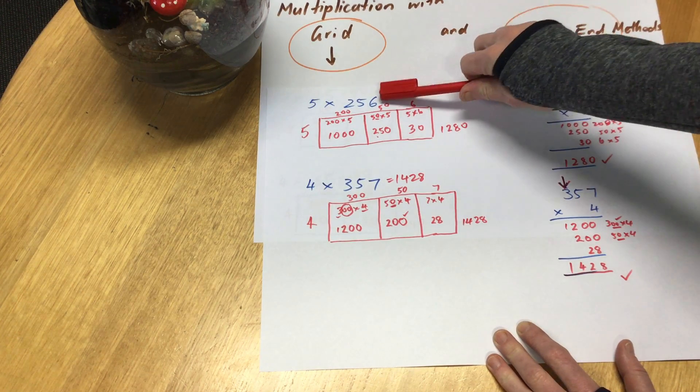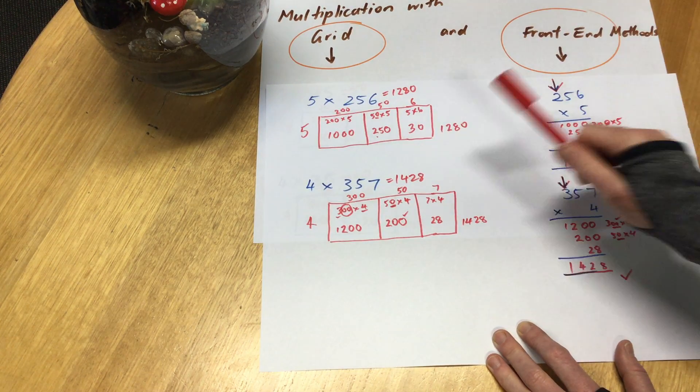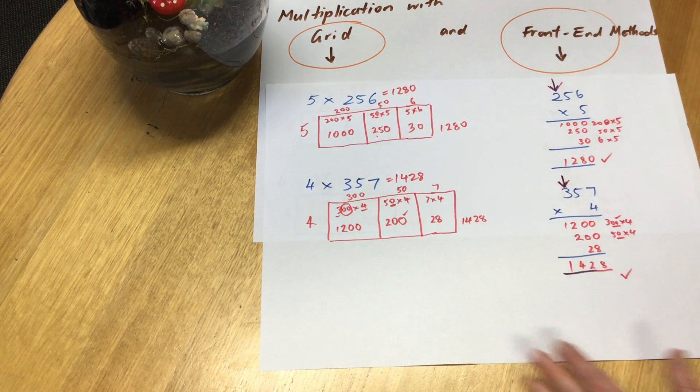Your job is to create some 3-digit numbers multiplied by a single digit and practice your grid and front-end method.